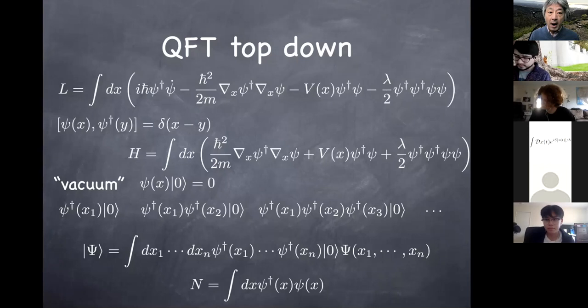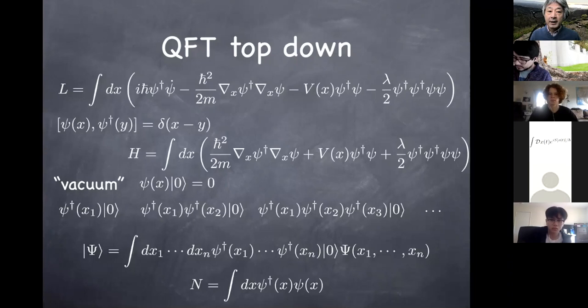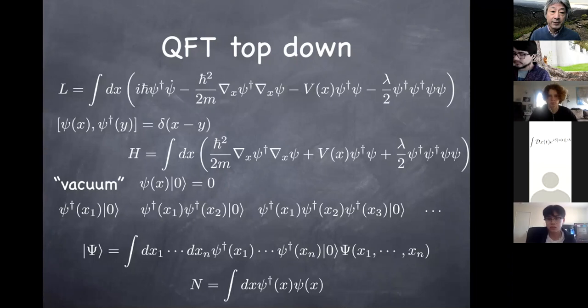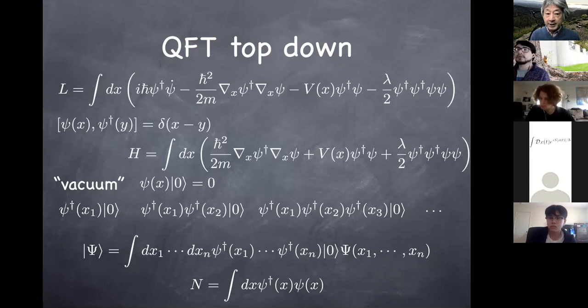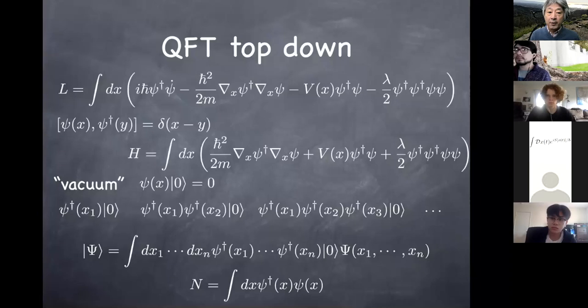Once you're given the Lagrangian, you can derive the canonical commutation relation — that's an advantage over the Hamiltonian approach, where you have to accept the canonical commutation relation by assumption. The Lagrangian knows that too, so there's nothing you cannot derive from it. You also derive the Hamiltonian from this Lagrangian, so everything comes from it. And given that the canonical commutation relation is the same as the annihilation-creation operator for the harmonic oscillator, we know how to define the vacuum state.